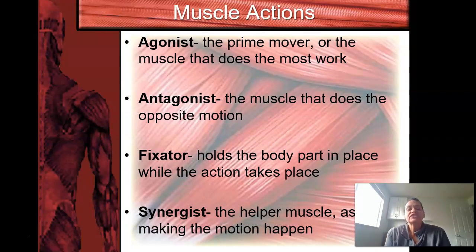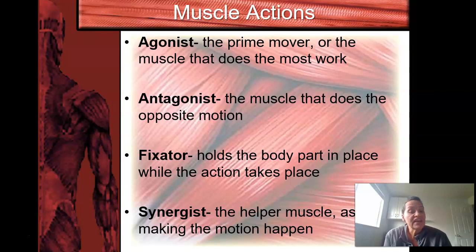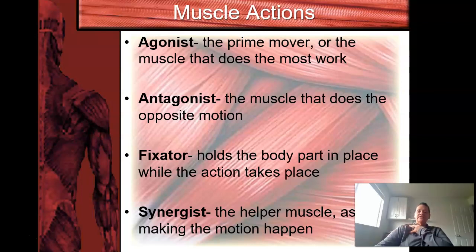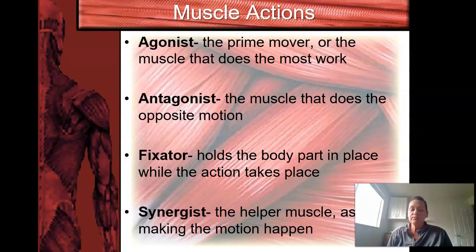The muscles perform different actions. An agonist is the prime mover — the muscle that does most of the work. An antagonist is the muscle that does the opposite motion. A fixator holds the body part in place while the action takes place — for example, fixator muscles around your shoulder hold it in place while the arm muscles move. A synergist is the helper muscle that assists in making the motion happen.